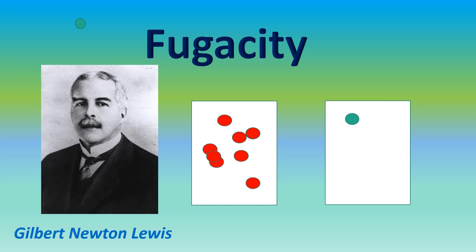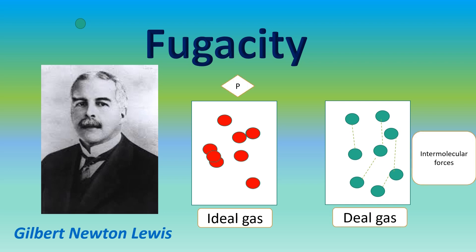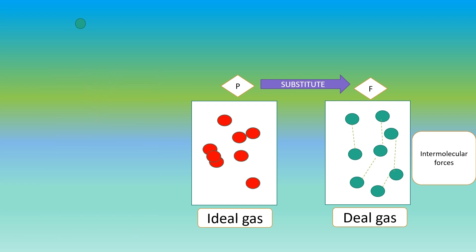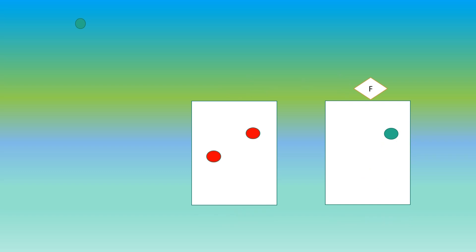Fugacity. The term fugacity was first developed by Gilbert Newton Lewis, and he used it to describe how Gibbs free energy could behave in a real gas. The main difference between real and ideal gases is that ideal gases only function at low pressure, because at high pressure, real gases have intermolecular interactions between each other.